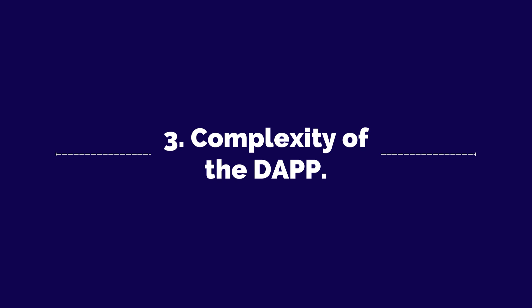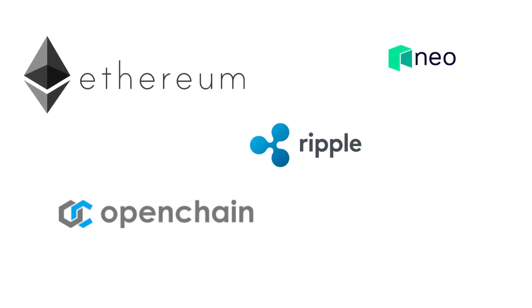Another variable that affects DApp complexity is the platform used. Numerous platforms can be used to build DApps from the ground up, with Ethereum being the most popular. Other platforms include Ripple, NEO, and Openchain. The most important thing to note here is that you have to be careful about the platform you choose — ensure the platform is compatible with the industry of the DApp you want to create. For example, Ripple is most beneficial for those who want to create financial systems, while Ethereum also has its own best use cases.